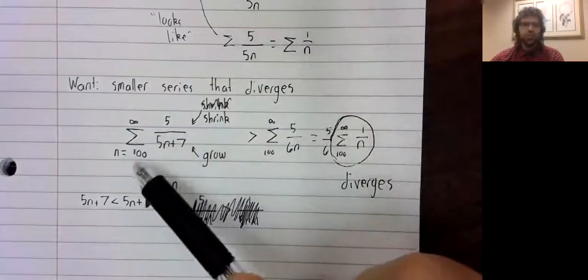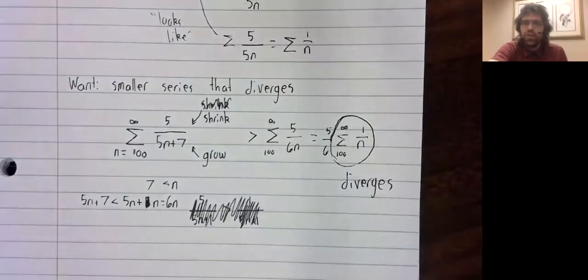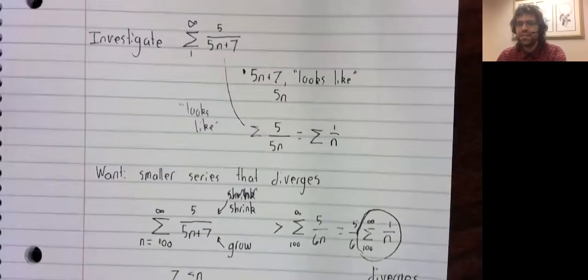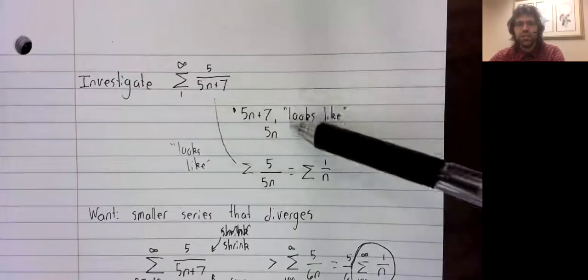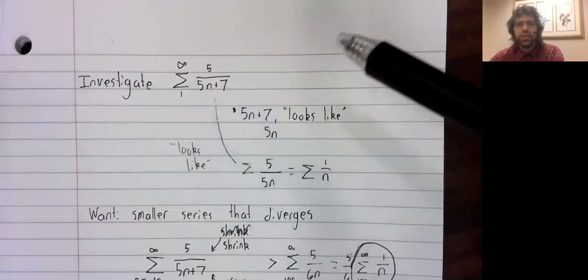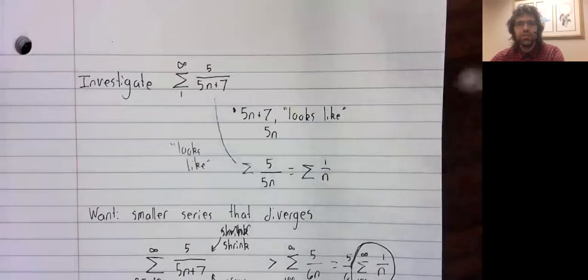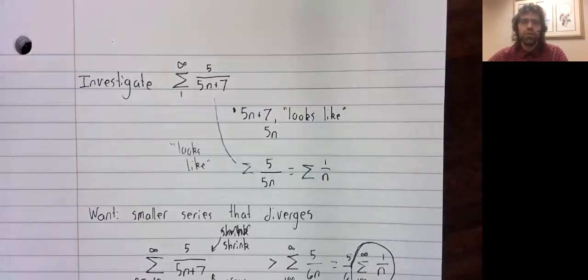Now this was not an obvious step. At least I don't think it was obvious. And using the comparison test like this kind of feels like it's missing the point. I mean our intuition is that this series looks like this series, and therefore diverges.